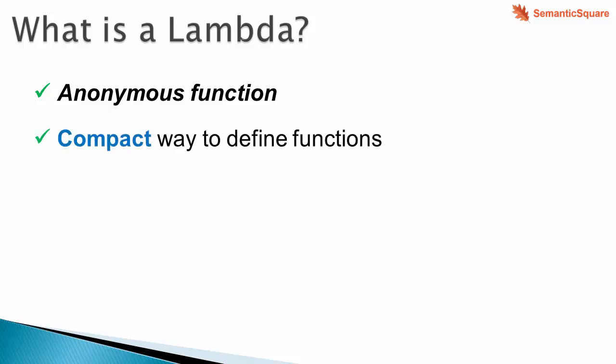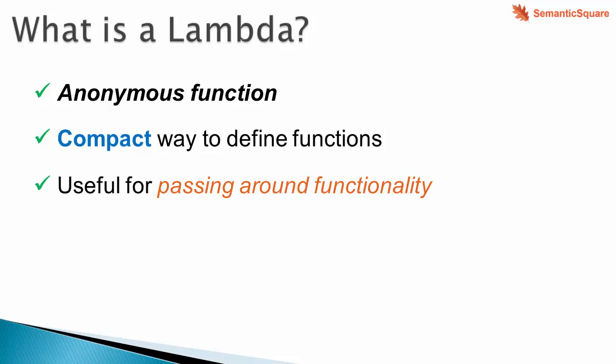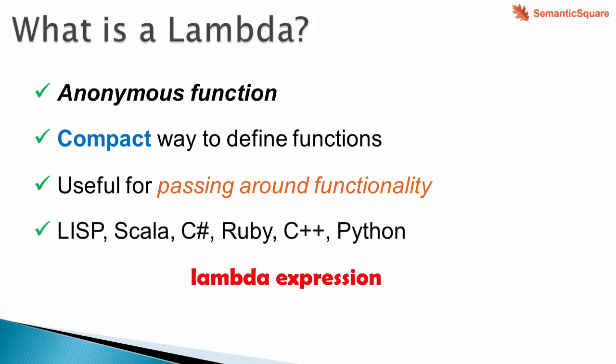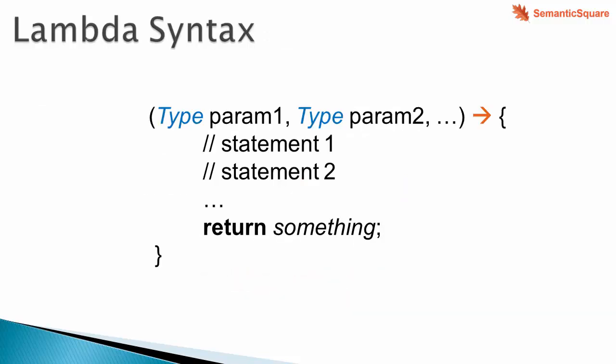A lambda is a compact way of defining a function which can be passed around. It is useful when we want to pass around some functionality, and it helps in doing so in a very compact way. Since it can be passed around, it is basically an expression — a lambda expression. These are some of the languages that support lambda expressions.